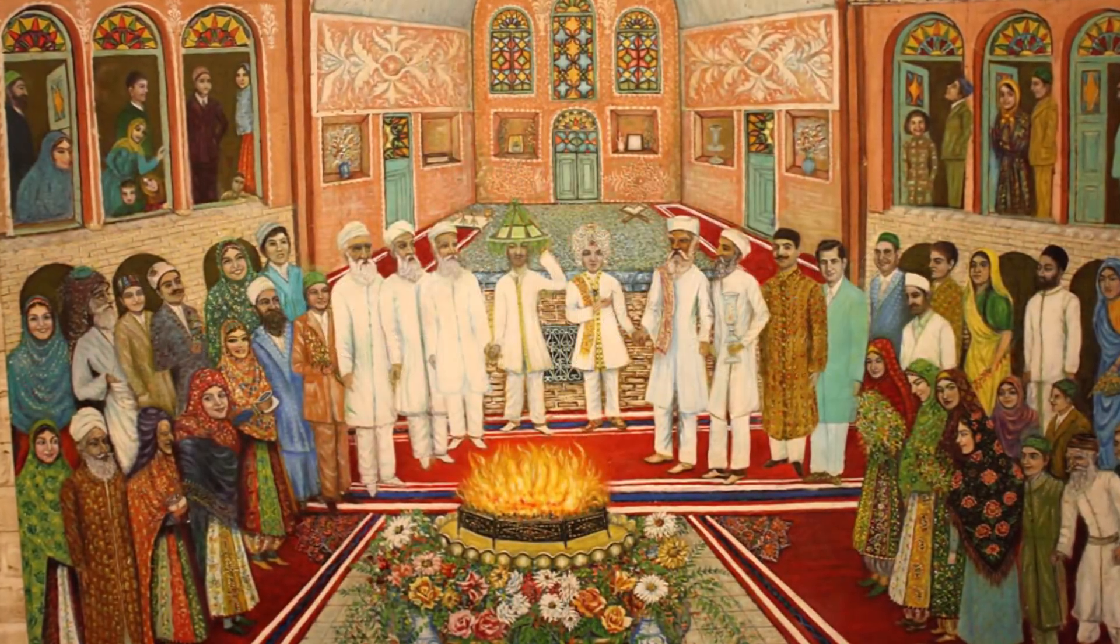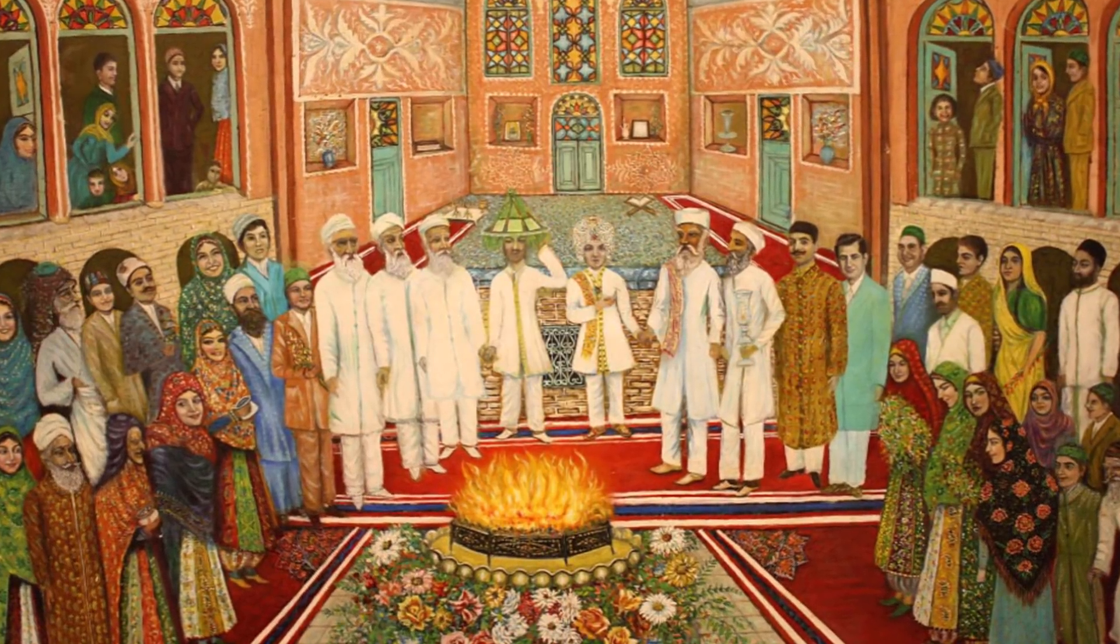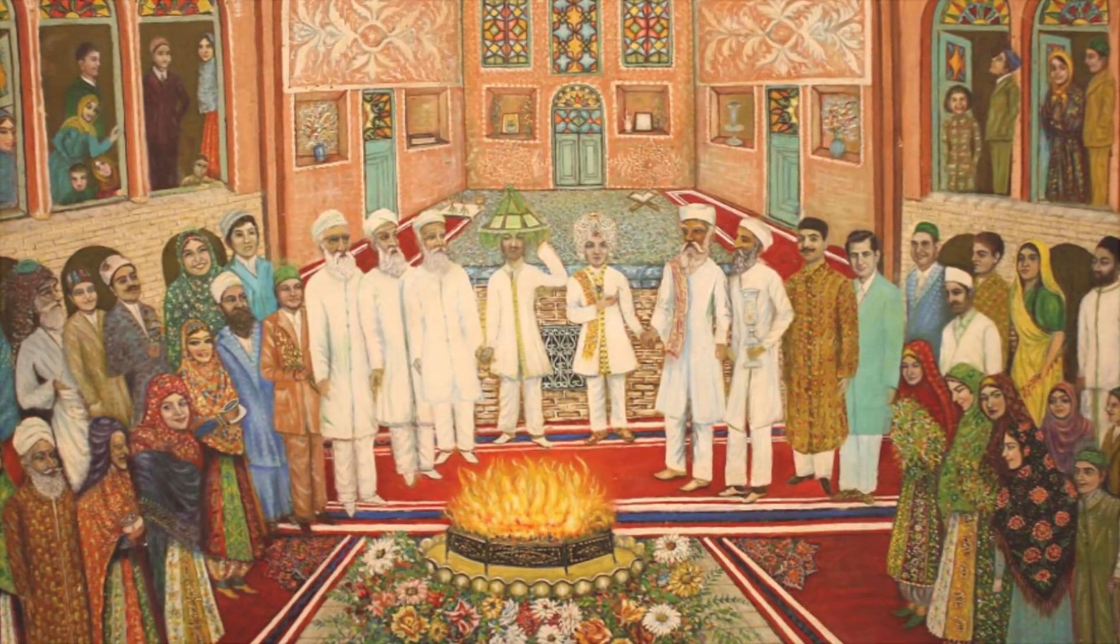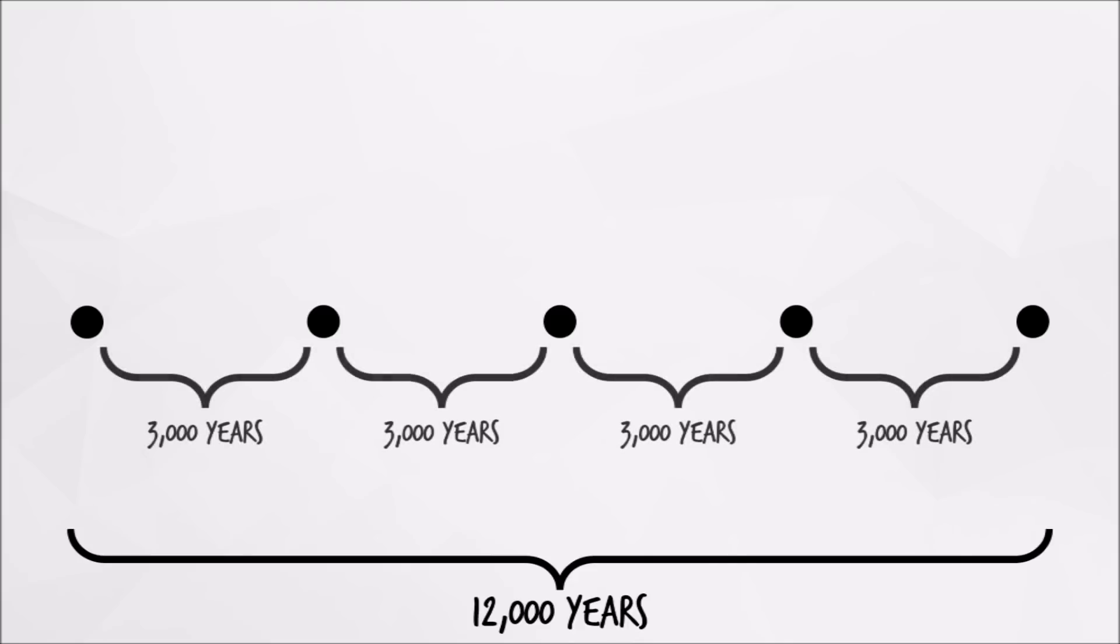Next in line to place a date on creation was Zoroastrianism, one of the world's oldest and more prominent religions. Zoroastrians divide their chronology into four periods that span about 12,000 years, each period lasting about 3,000 years. The first period included spiritual creation, while the second period was the physical creation that saw the Earth come into existence.